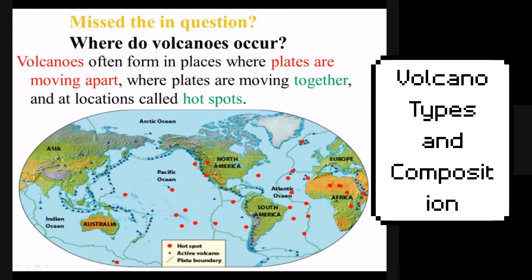Most volcanoes on Earth are associated with tectonic boundaries, specifically divergent boundaries or convergent oceanic boundaries. The Ring of Fire in the Pacific Ocean has a lot of active volcanoes because there are many convergent boundaries where the oceanic plate is being subducted under a continental or another oceanic plate. In the West Pacific, there are many oceanic-oceanic convergent boundaries and therefore many volcanic islands. Near the Americas, oceanic plates are subducted under the continents, producing convergent boundaries and composite volcanoes on land.